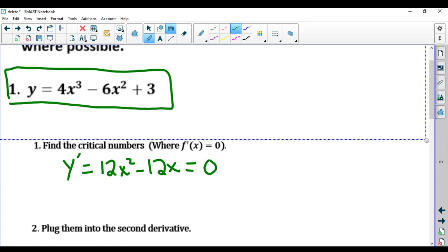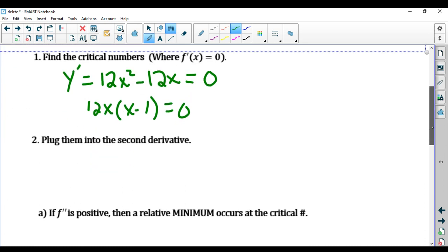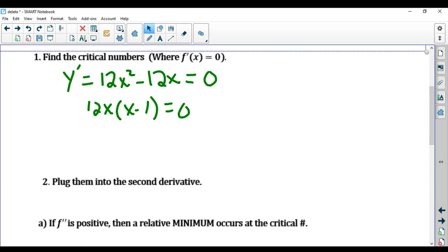And find out where that equals zero. The easiest way to find out where this equals zero, because it has more than one x, is to factor it. We're going to factor out 12x as a common factor, and then solve each factor. We'll get x = 0 and x = 1. These are the critical numbers.